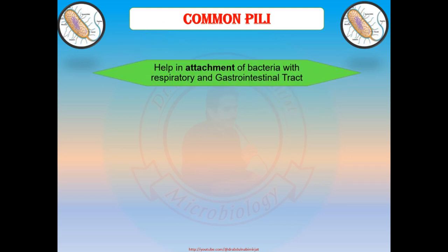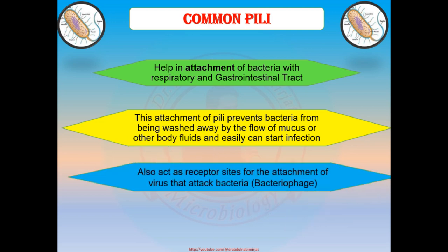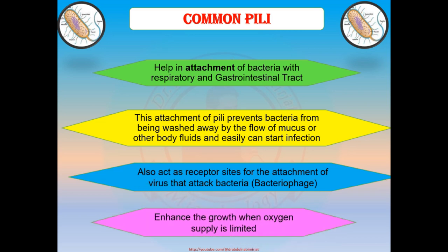Common pili help in attachment of bacteria to the respiratory and gastrointestinal tract. This attachment prevents bacteria from being washed away by the flow of mucus or other body fluids, allowing them to establish infection. Common pili also act as receptor sites for the attachment of viruses that attack bacteria, such as bacteriophages, and they enhance growth when oxygen supply is limited.